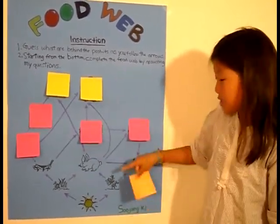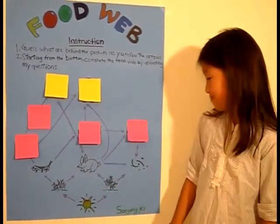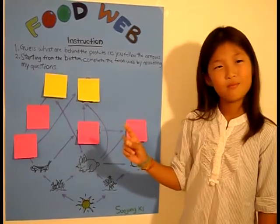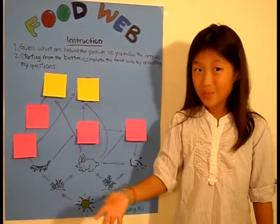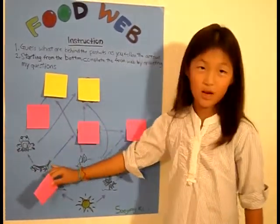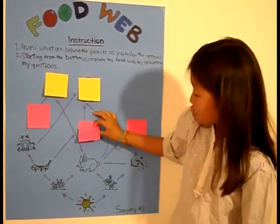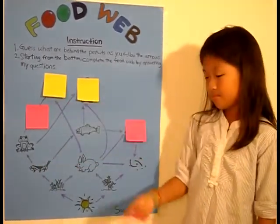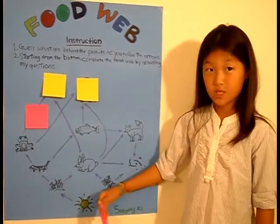This bunny eats bean plant and grass. Frogs eat grasshoppers. Trout also eat grasshoppers. And foxes eat trout and bunnies, or rabbits.